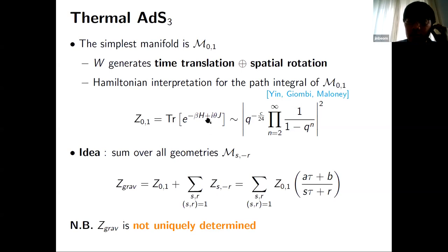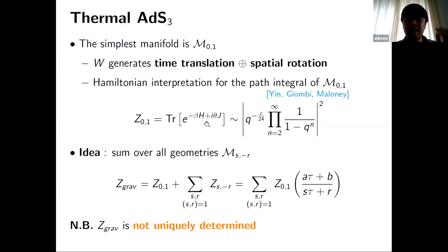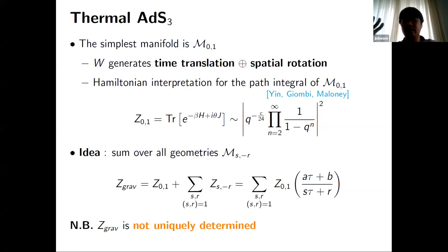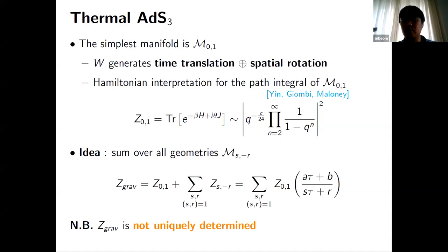Regarding the ambiguity from the gravity picture: the ambiguity is about the heavy spectrum. Both the Rademacher and Poincaré partition functions share the same light spectrum, but their excitation spectra can differ. The ambiguity concerns how the heavy (uncensored) states are determined — the modular invariance constraint does not uniquely fix the heavy excitation spectrum. There are different ways to determine the spectrum in the uncensored region, and I don't have a sharp argument about the general structure of this ambiguity.